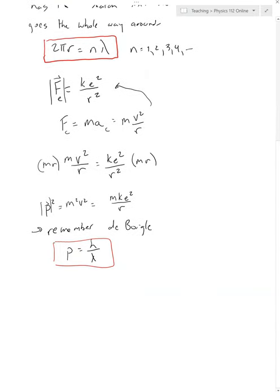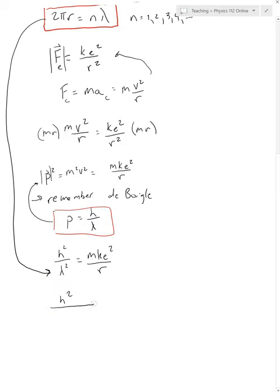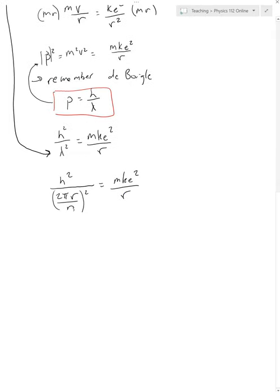So if we plug the De Broglie relation in, we're going to get H²/λ² = MKE²/R, because it's momentum squared. Now, this lambda squared — what we're going to do is plug in the equation we had earlier: the circumference condition 2πR/N. So we're going to get H² times (2πR/N)² on the left side, and that equals MKE²/R. Simplifying this, we get N²H² over 4π²R².